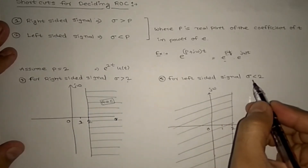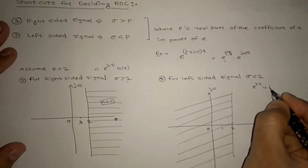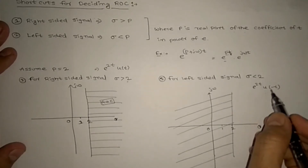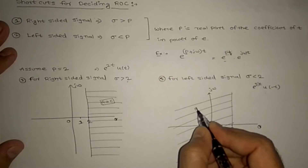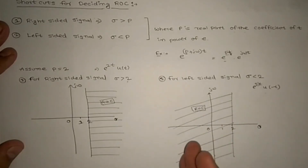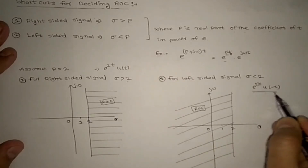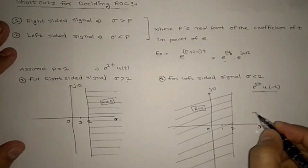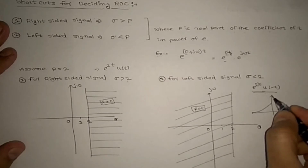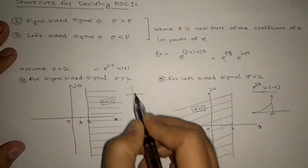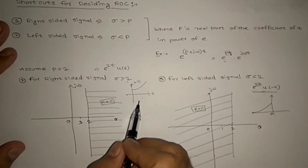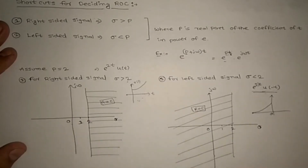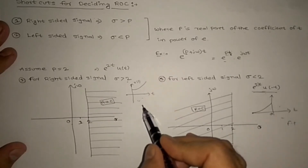For a left-sided signal, σ is less than 2. For example, e^(2t)·e(-t) is a left-sided signal. Here the real part is 2, so we use this, and this is the ROC — completely left-sided. This is a stable signal because the jω axis is included. The other signal is exponentially increasing and not absolutely integrable because the jω axis is not included, while this one is absolutely integrable.